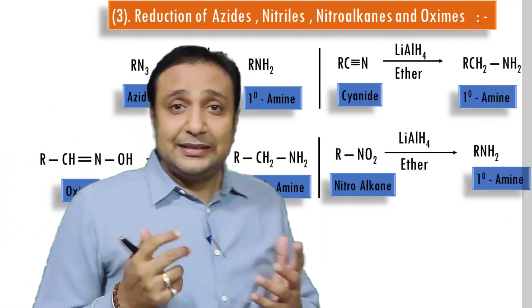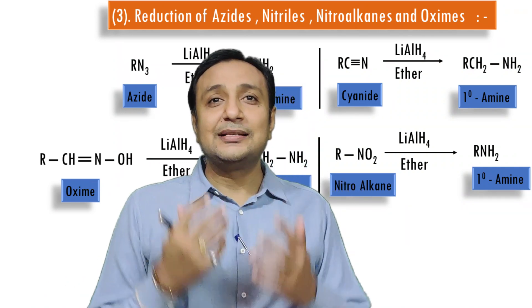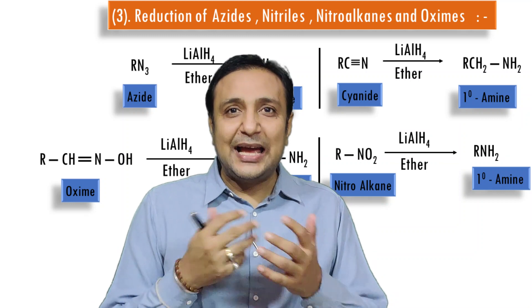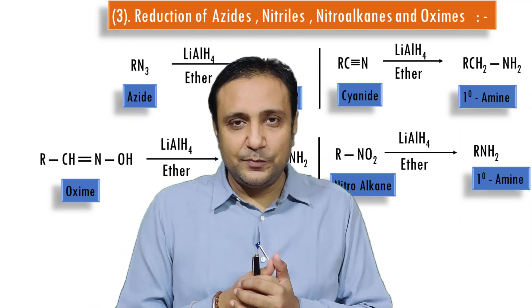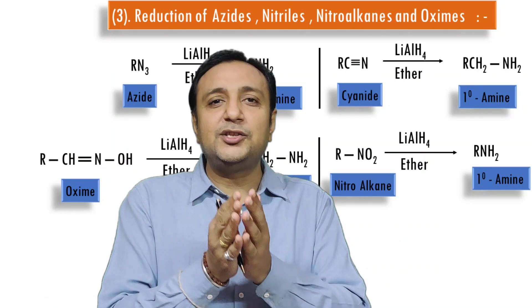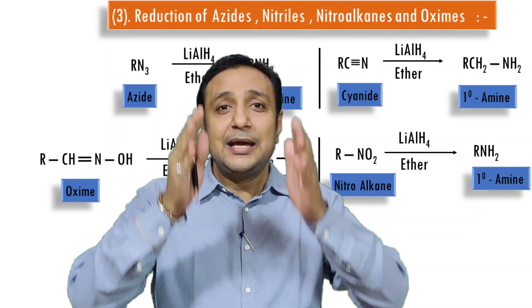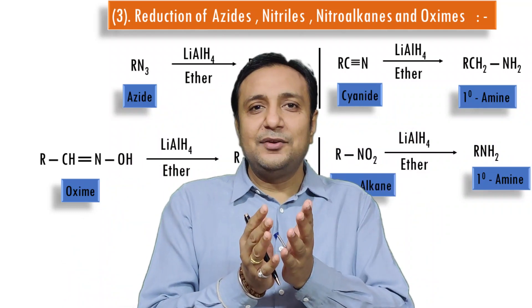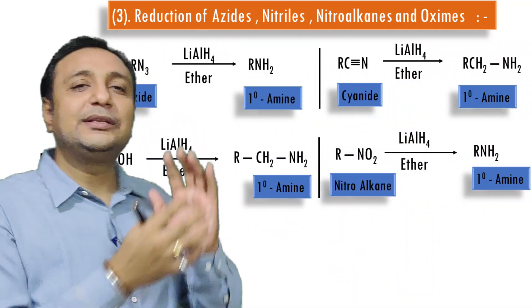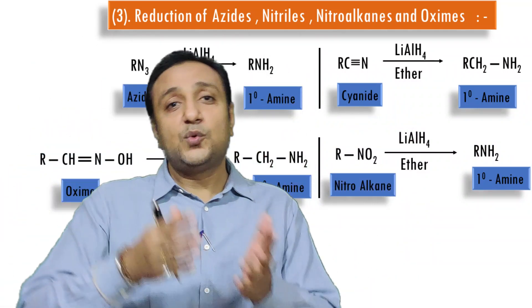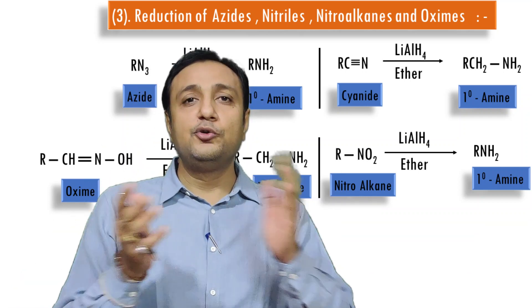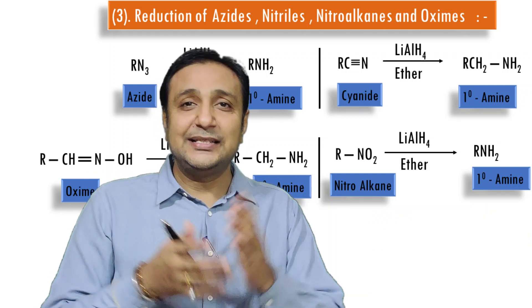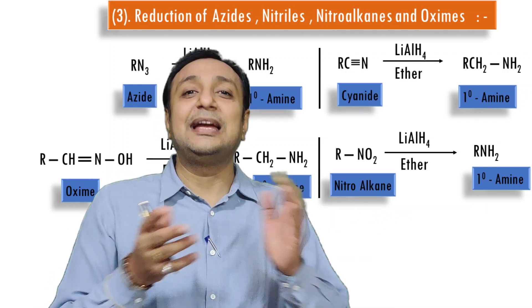The third application is the reduction of azides, nitriles, nitroalkanes, and cyanides. All of these functional groups produce primary amines upon reduction with lithium aluminium hydride. Azides, oxides, cyanides, and nitroalkanes all undergo reduction to give the corresponding primary amines.